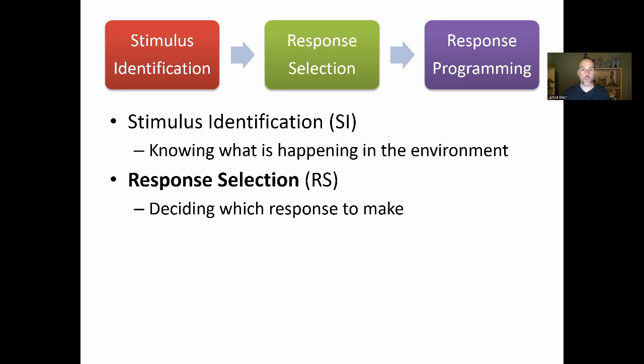Once we've identified what's happening, we go on to response selection — deciding which response to make. Maybe you see a baseball flying towards you and think: do I want to move my hand and catch it? Move out of the way? Or just sit here and yell 'heads up'? Response selection involves lots of possibilities. It's on bold in the slide because the next module will delve much deeper into response selection.